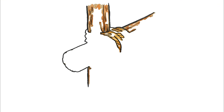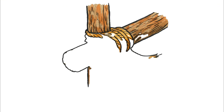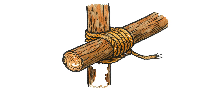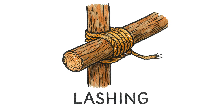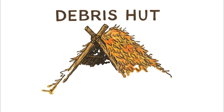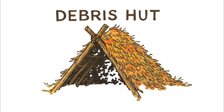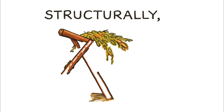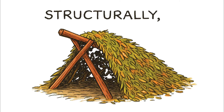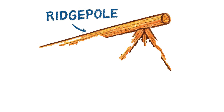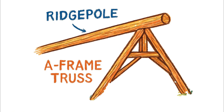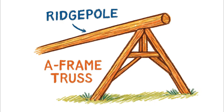Imagine cinching that final wrap on a lashing, the fibers groaning as you pull it tight, locking two intersecting logs into a single immovable unit. From that single joint, we scale up to a complete system like the classic debris hut — far more than a simple pile of leaves. At its heart is a long ridge pole, a primary beam supported on one end by a robust A-frame truss, which is the main load-bearing element.